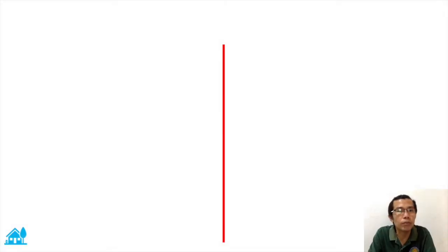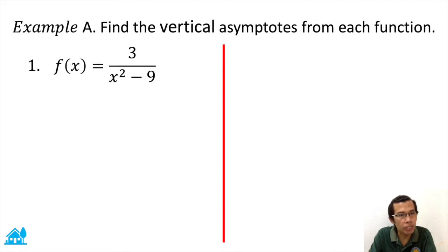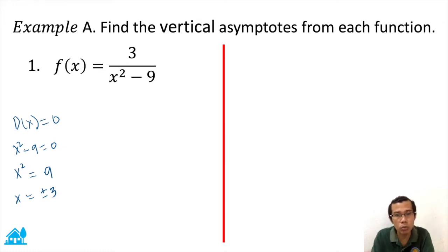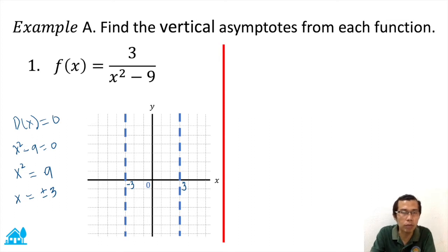Let's start with our first example. Find the vertical asymptotes of each function. Number one: three over x squared minus nine. We let the denominator equal zero: x squared minus nine equals zero. By applying the property of equality, we have x squared equals nine. Multiplying both sides by the square root gives x equals positive and negative three. On our graph, we locate positive and negative three on the x-axis — those are our vertical asymptotes. Just to clarify, this is not yet our graph; this is simply the asymptote.